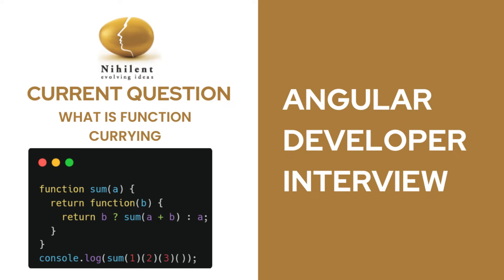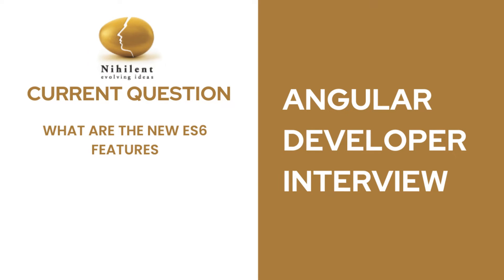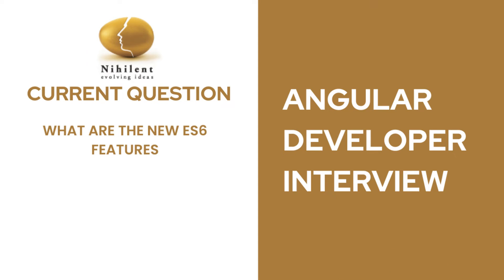Do you know what the new ES6 features are? ES6 comes with arrow functions, rest and spread operators, generators, modules for separate files that can be imported, destructuring, object literals, and new array/object methods — Object.entries, Object.values, and Object.keys. These are some common features that come with ES6.